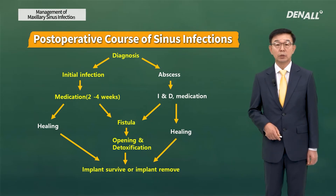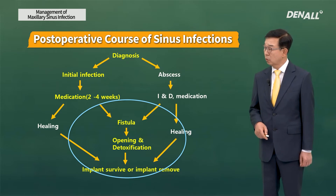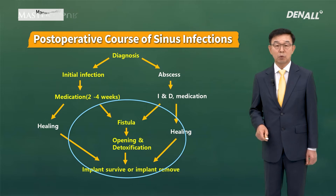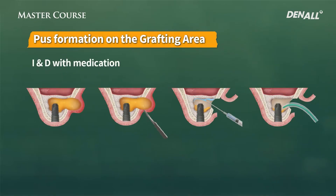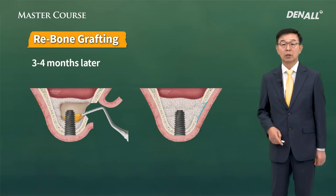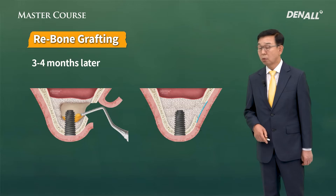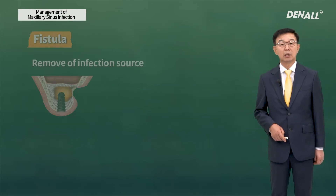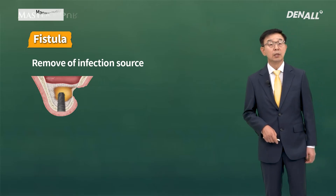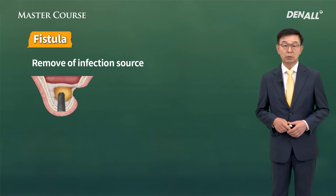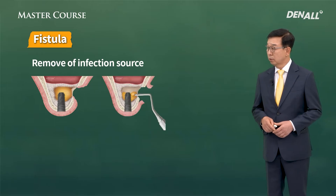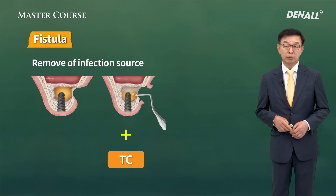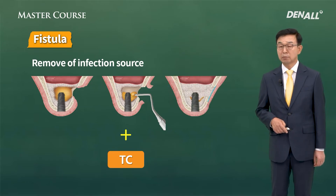Next, I'm going to talk about cases where fistula has been formed — where medication may be insufficient for healing. It can lead to chronic sinusitis and fistula formation. If there is infection in the grafted area or the sinus, healing cannot be done with just medication; you need to do drainage along with medication. After 3 to 4 months, if necessary, you can do additional bone graft or provide prosthesis. In extremely rare cases, fistula can be formed. If fistula is formed, medication alone is insufficient — you need to make an incision, remove the root cause of infection, conduct detoxification, do bone graft, and then complete the case.